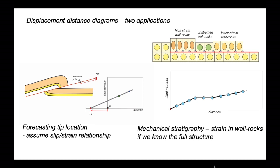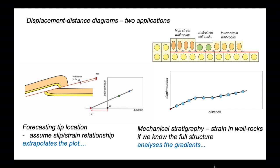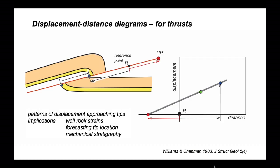So we can define their displacements. In the first example of forecasting the thrust tip location, we're extrapolating from the plot. For mechanical stratigraphy, we're analysing the gradients and their variations within the plot itself. A quick introduction there to displacement distance diagrams for thrusts — they're really useful tools for investigating the geometry of thrust faults and the mechanical behavior of their wall rocks.